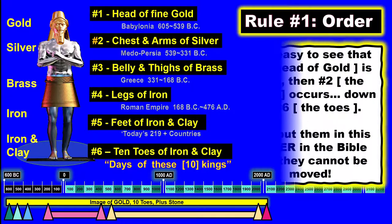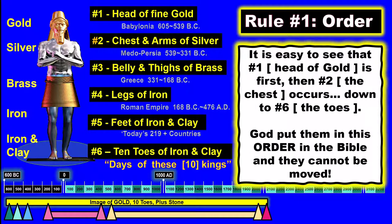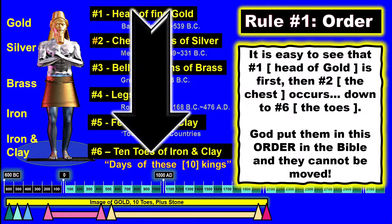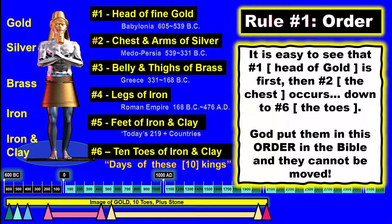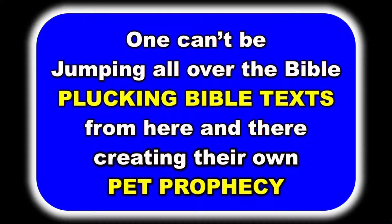Let's see how rule number one, order, applies to the metal man in Daniel 2. Notice that there is a head of gold, a chest and arms of silver, and so on clear down to the ten toes of iron and clay. It's easy to see that number one, the head of gold is first, then number two the chest, then number three the belly and thighs of brass, and so on. God put them there in this order in the Bible and they can't be moved around. It goes from the head all the way down to the toes. One can't be jumping all over the Bible, plucking texts from here and from there to create their own pet prophecy.